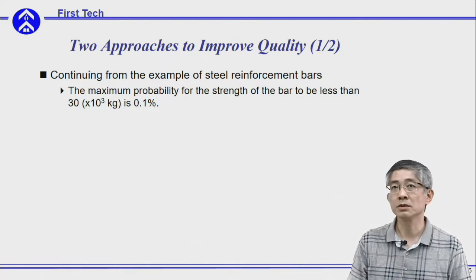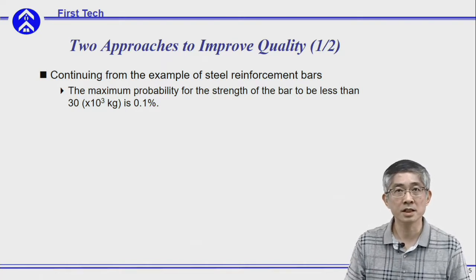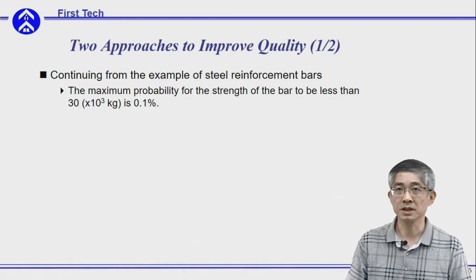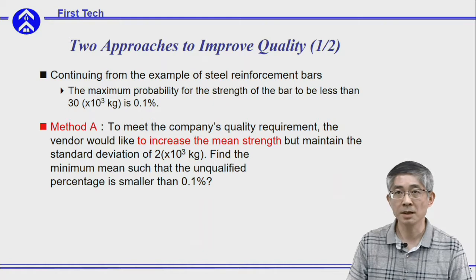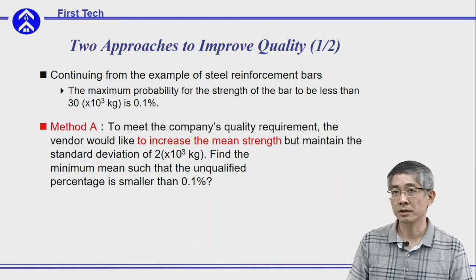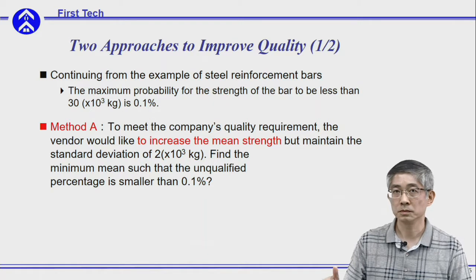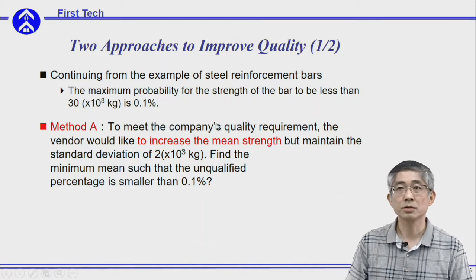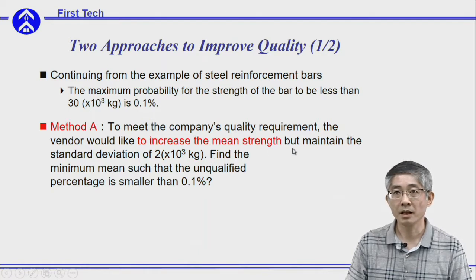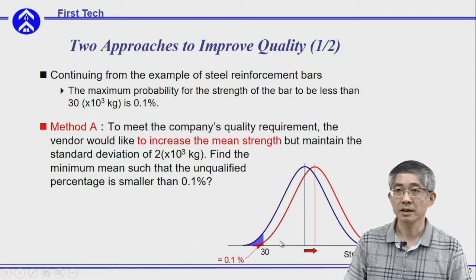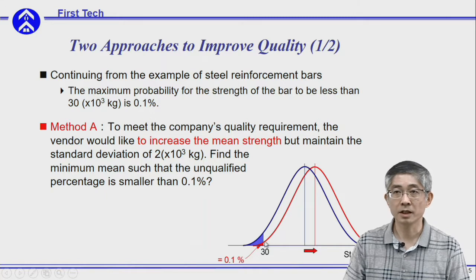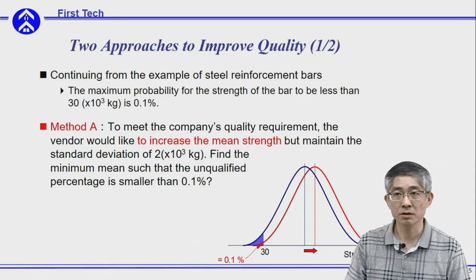As a vendor, you need to think about how to improve your product so it can be accepted by the company. The current distribution is not acceptable, so there are two methods to consider. Looking at the figure, the current distribution is shown as the blue curve, and the probability of a strength smaller than 30,000 kilograms is greater than 0.1%.